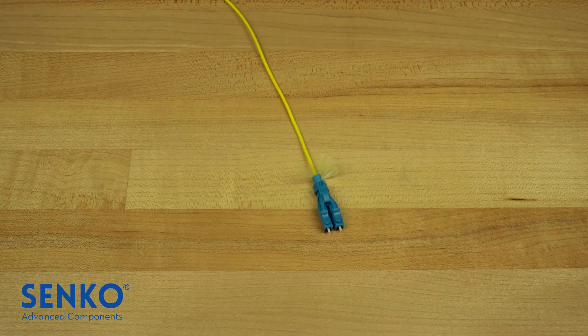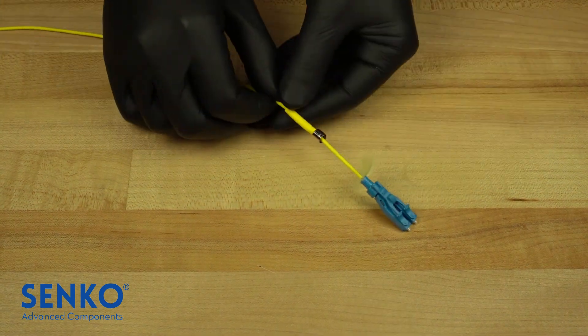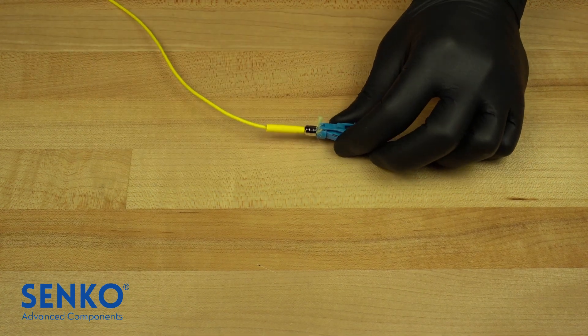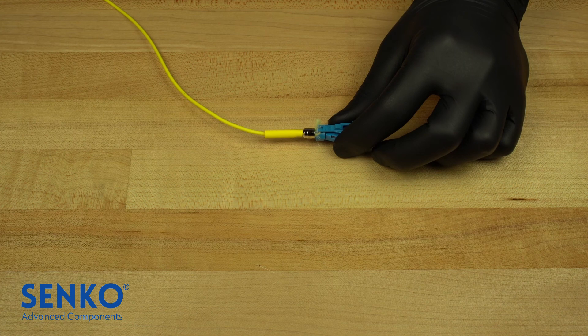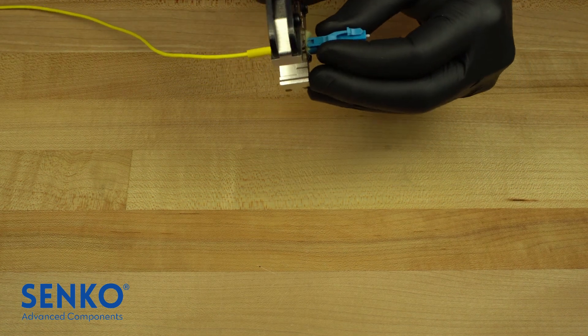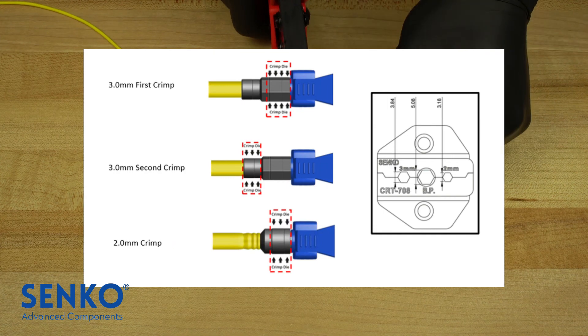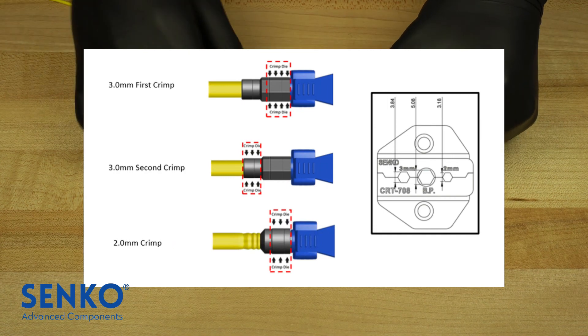Slide the crimp onto the back post trapping the yarn as shown. Using the middle cut in the CRT708 crimp tool labeled BP, clamp completely on the crimp. The image displayed shows the proper crimp region as this will give the connector the most tensile strength.